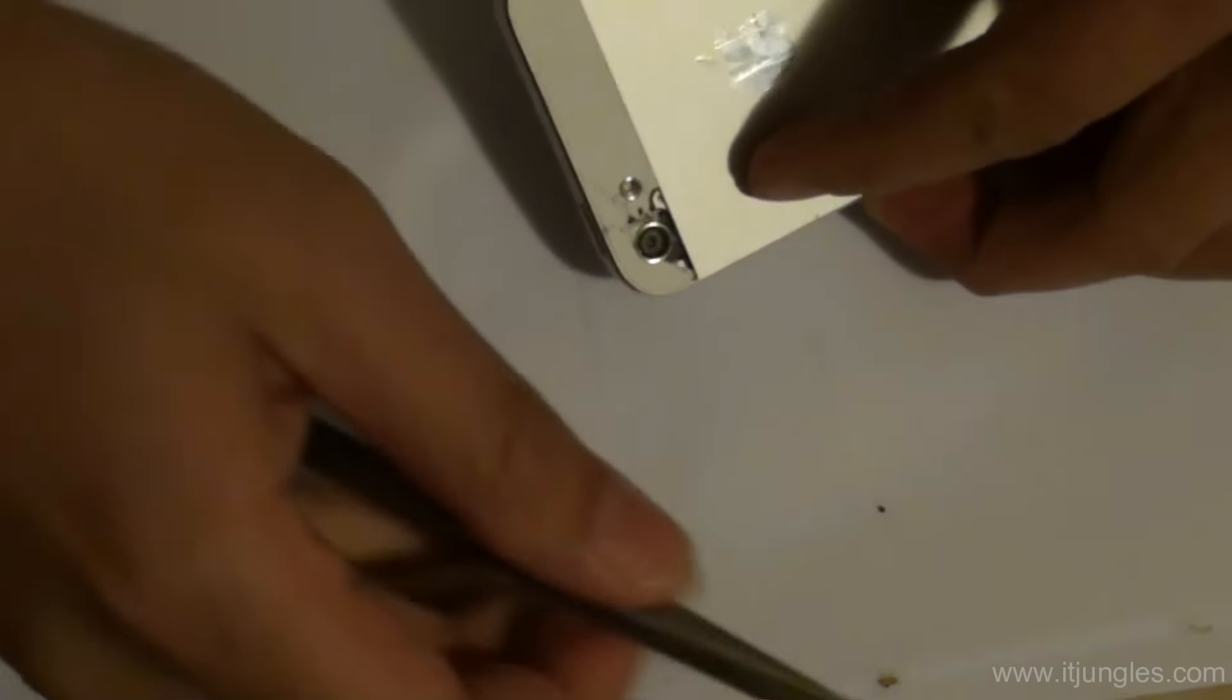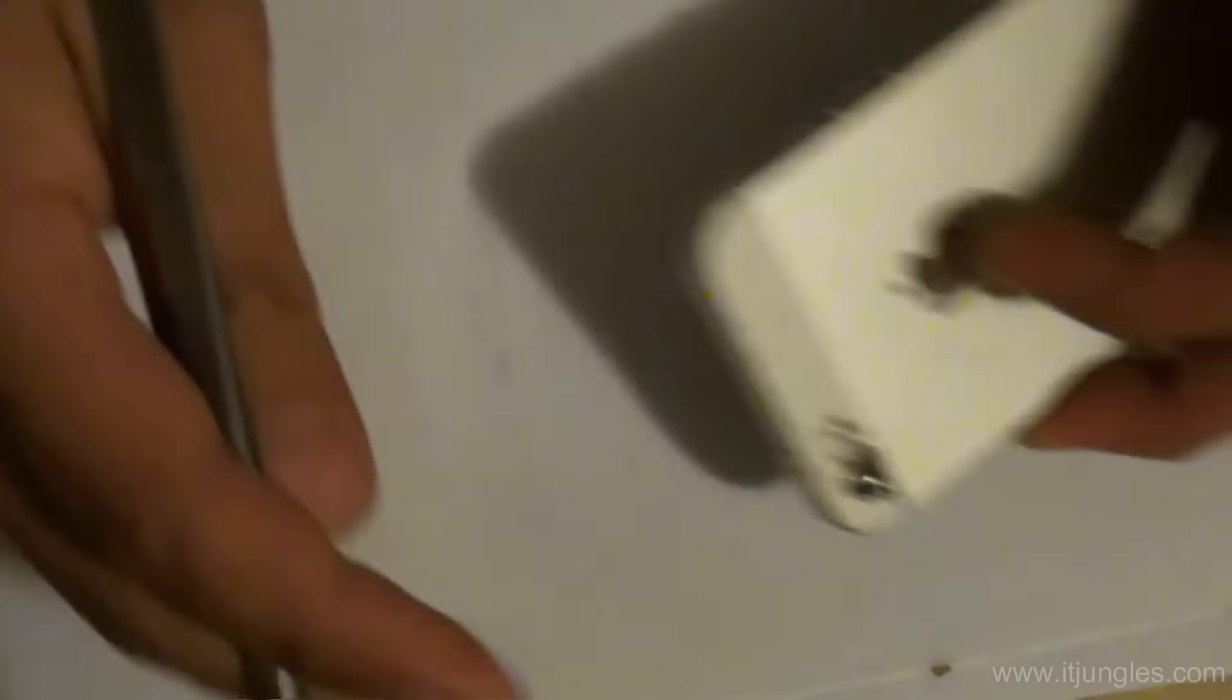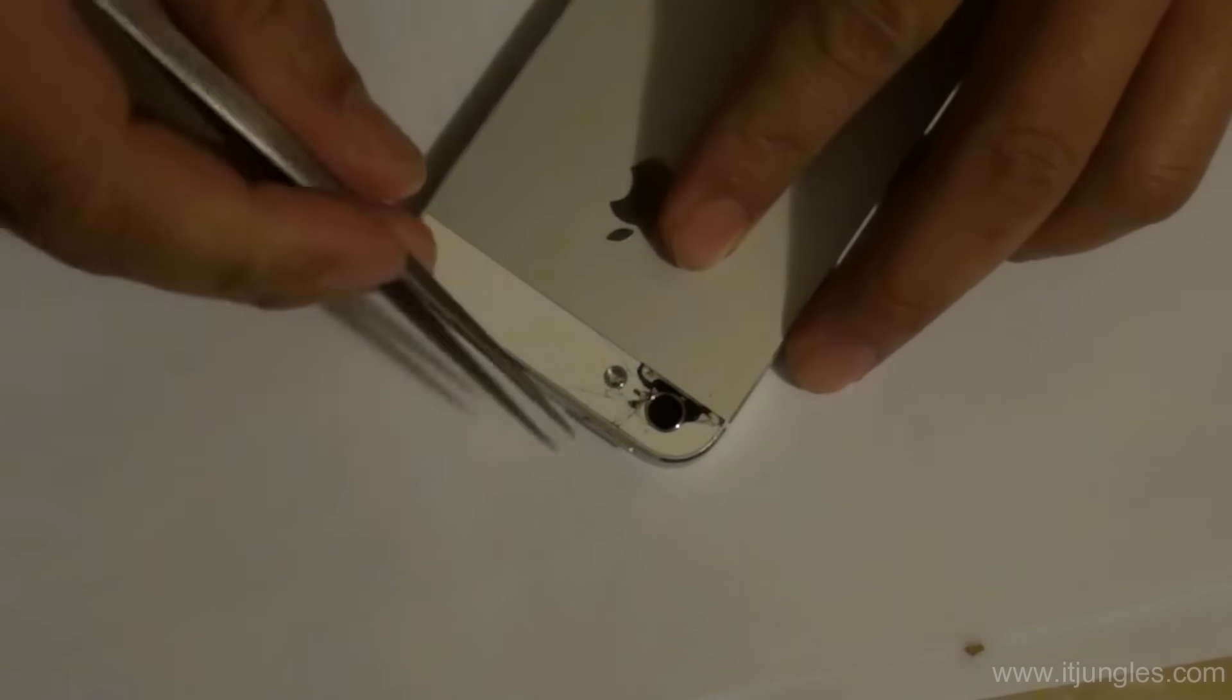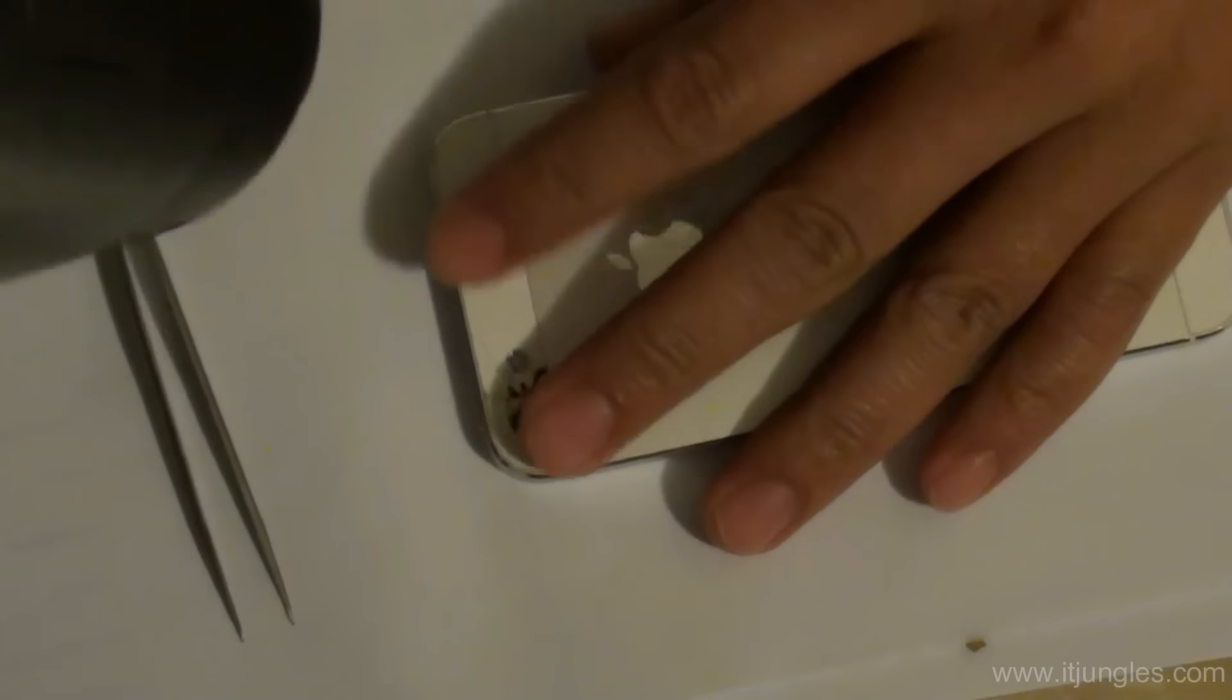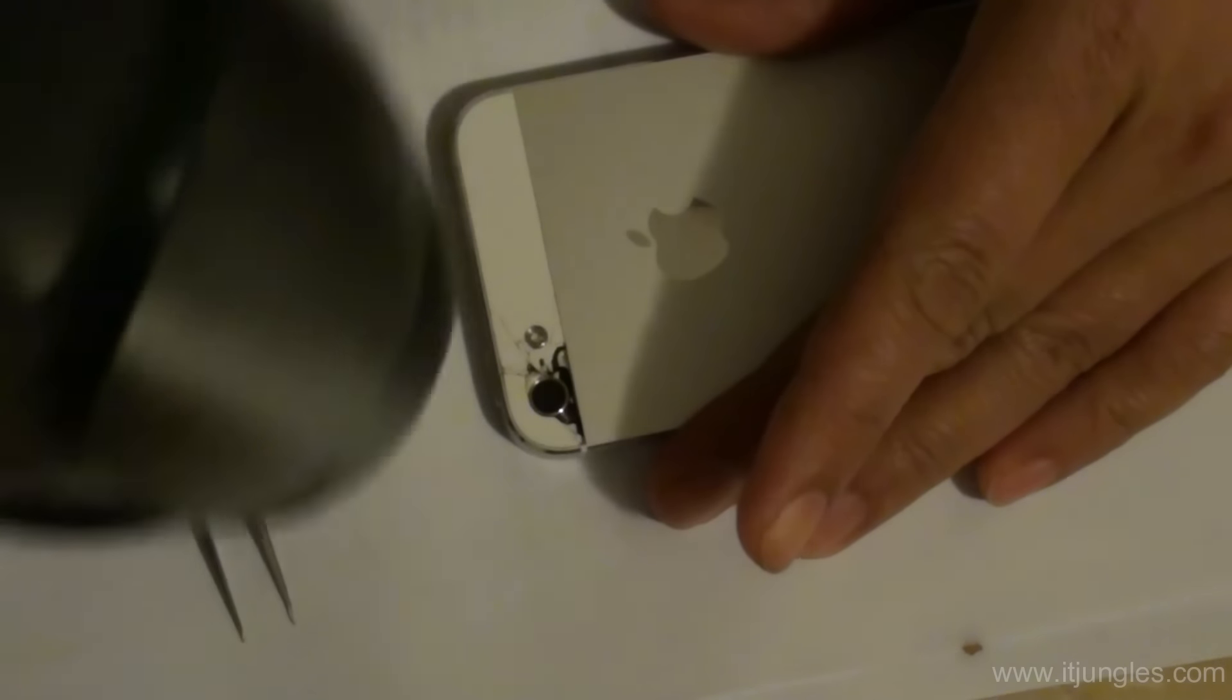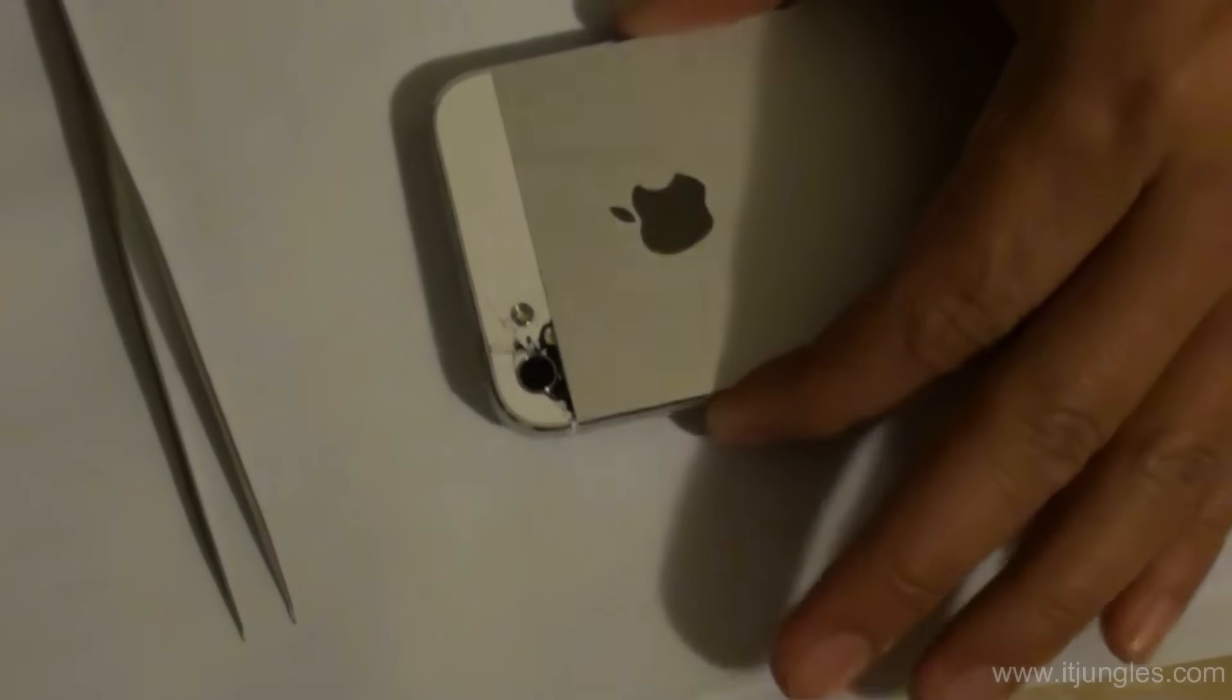Ideally, we would want to try to pry out the whole piece of glass in one go, but sometimes if it broke into many pieces or if it's too hard, you might have to do it piece by piece. Once in a while the heat may cool down, so if you live in a region where the temperature is really cold, you're going to need to reapply the heat once it's cooled down so that the glue becomes loose and we can remove the glass easier.